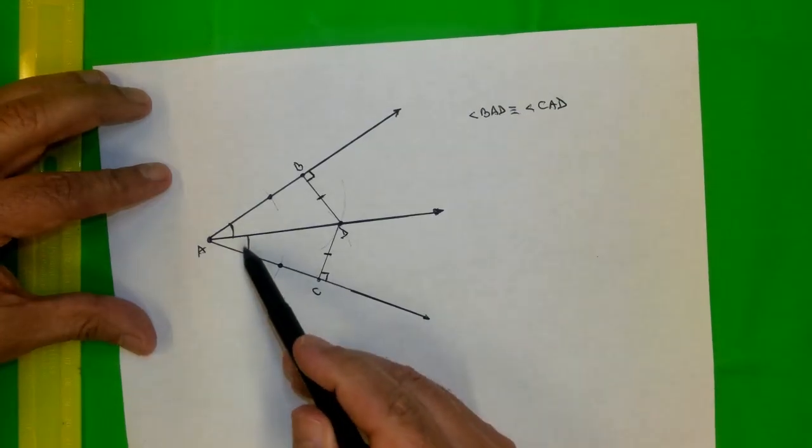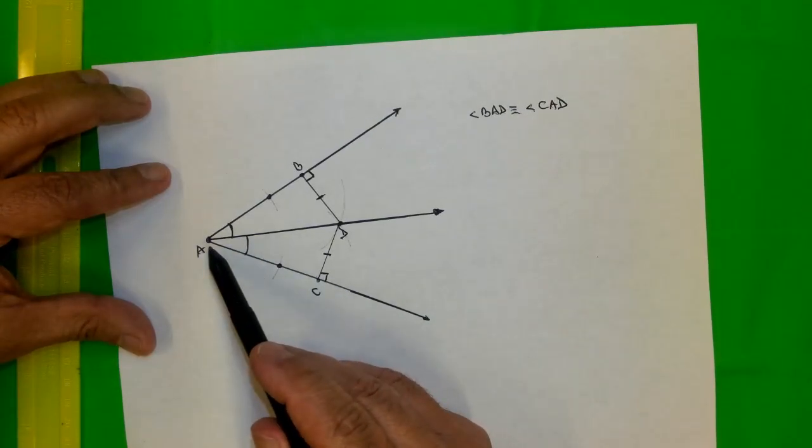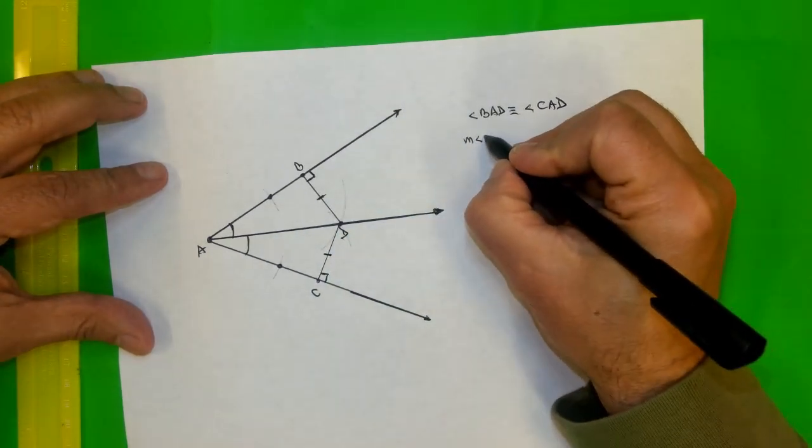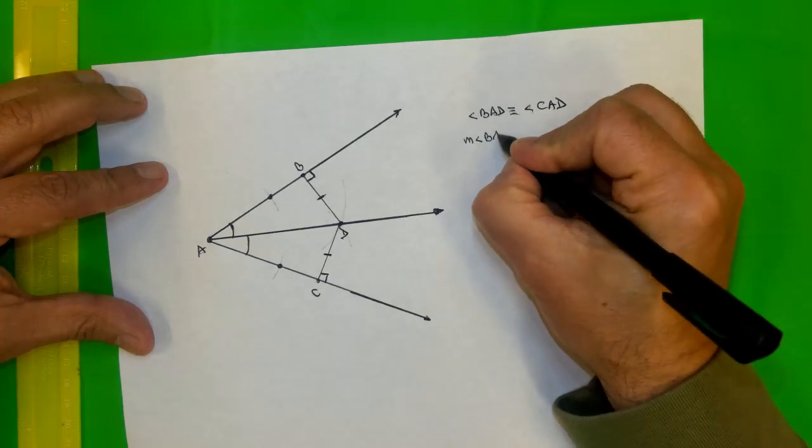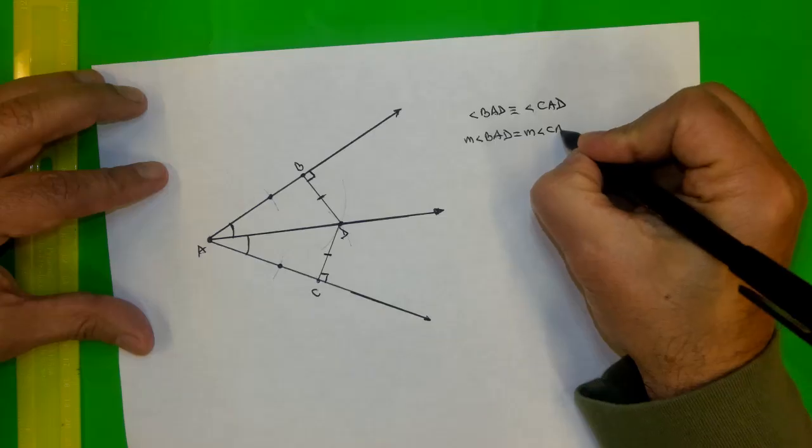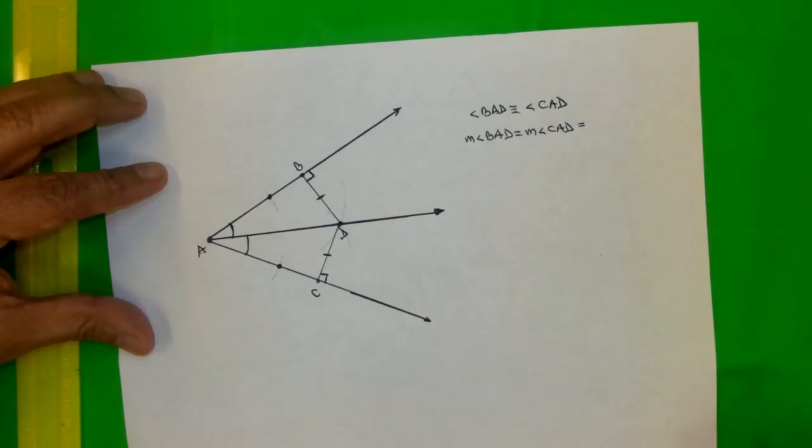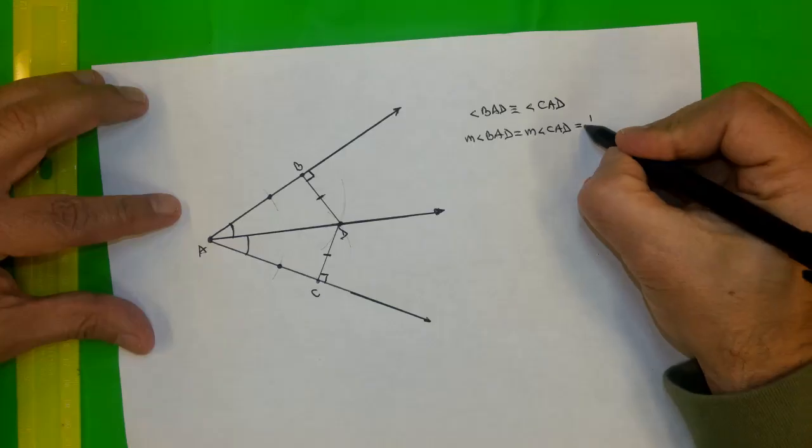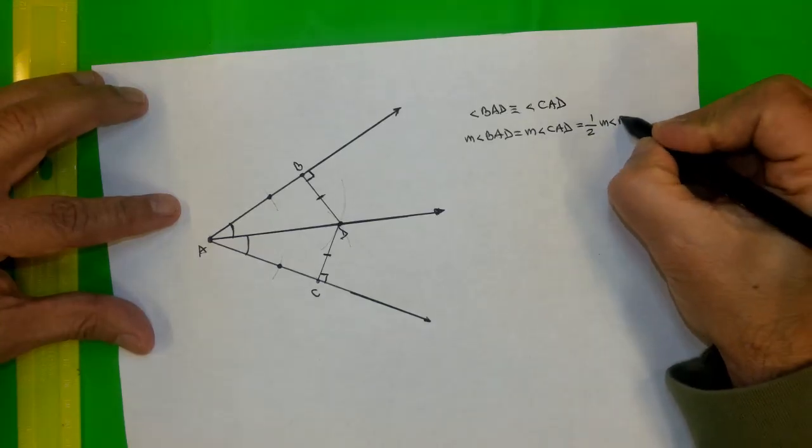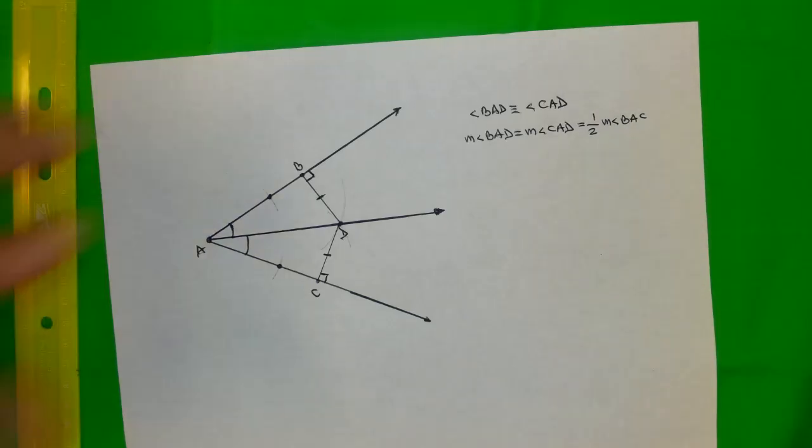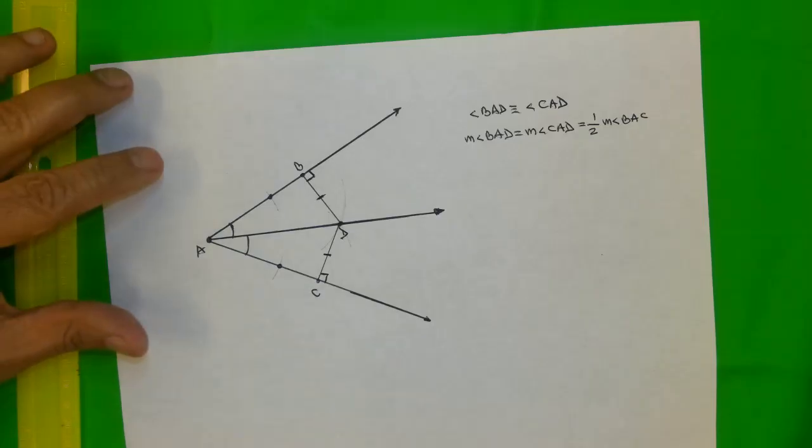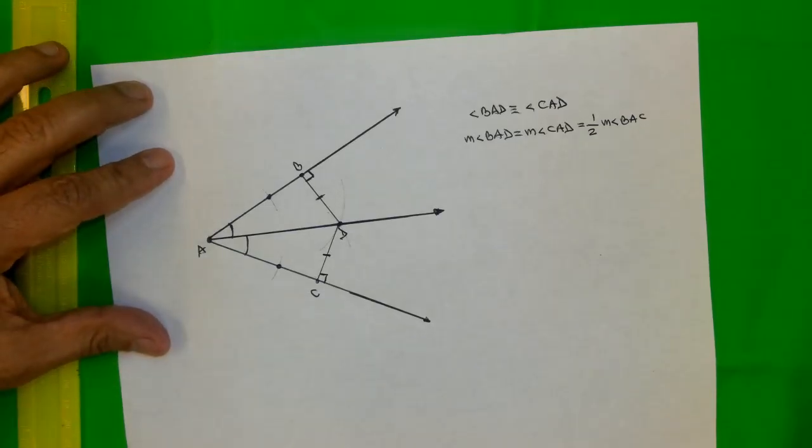You see, I marked them in the picture. They are congruent because this angle bisector cut the big angle in half. I can write a very similar statement. The measure of angle BAD equals the measure of angle CAD, and this measure of these two angles are half of the measure of the original angle BAC. This geometric relationship will help you to write algebraic equations in most cases.